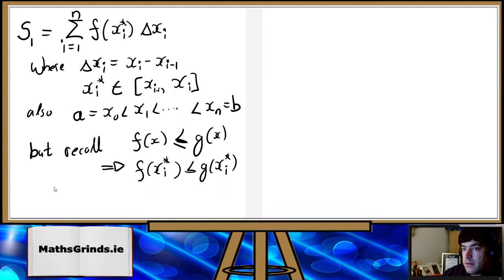So I think that would make it quite clear that this is less than or equal to the sum from 1 to n, g of x_i star times delta x_i, and that's the Riemann sum for S₂, if you want to call it the second function g.